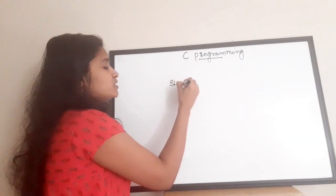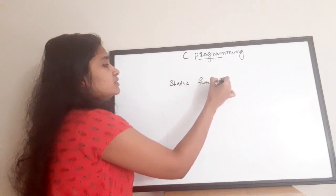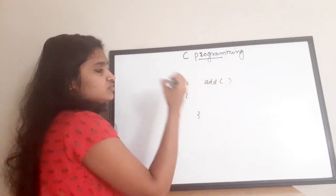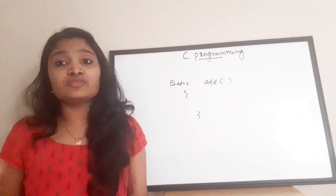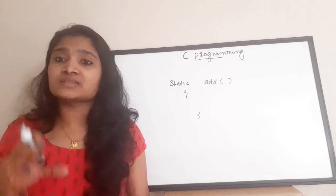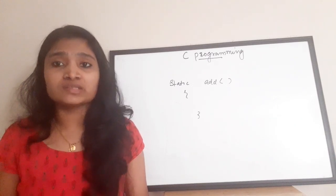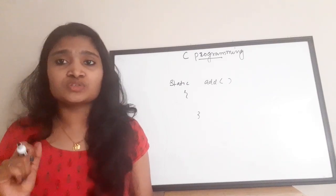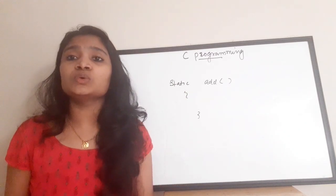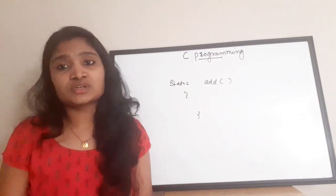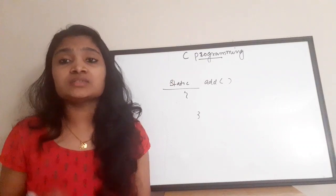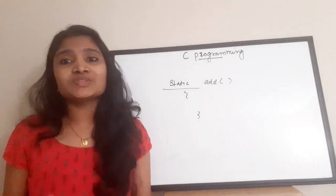The next question is: what is a static function? Normally functions are declared as global. If we declare a function as static — for example, 'static add()' — it has restricted access, meaning we can only access it within that source file. We cannot access a static function outside the source file. Declaring a function as static restricts its access to the file it is defined in.